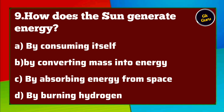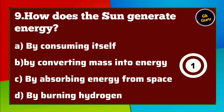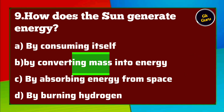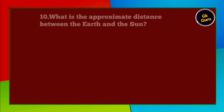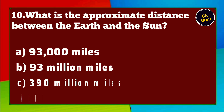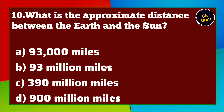How does the sun generate energy? A. By consuming itself B. By converting mass into energy C. By absorbing energy from space D. By burning hydrogen. Answer B. By converting mass into energy.